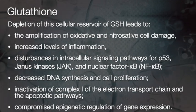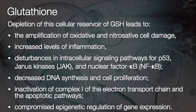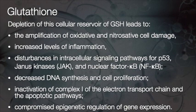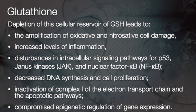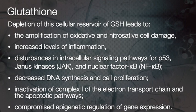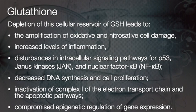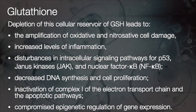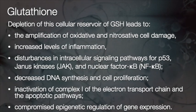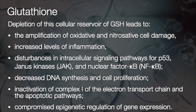A reduction or depletion of cellular glutathione can lead to many problems, such as the amplification of oxidative and nitrosative cell damage, increased levels of inflammation — which is very central to many aging problems — disturbances in intracellular signaling pathways for molecules like p53 and nuclear factor kappa-B, decreased DNA synthesis and cell proliferation, and inactivation of complex I of the electron transport chain, which is important for energy production in the mitochondria.